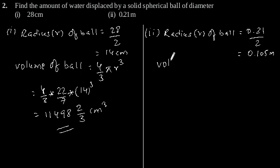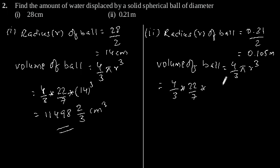Again, using the formula of volume of spherical ball, which is 4 by 3 pi r to the power 3. By putting the value of r we will get 4 by 3 into 22 by 7, r is 0.105 to the power 3.